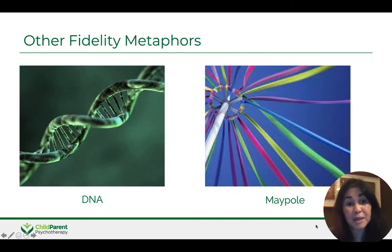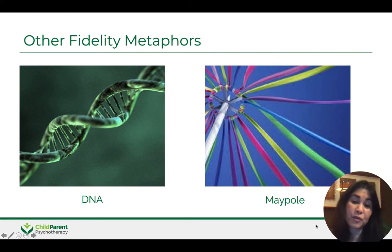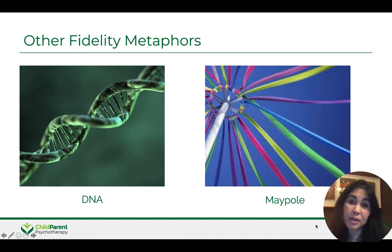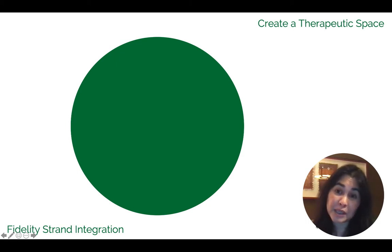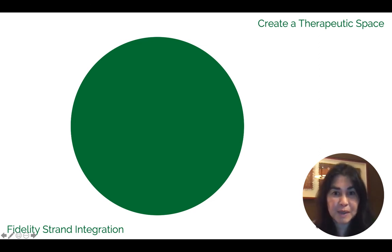Other metaphors that may be helpful are to think of these strands as our DNA. They're inextricably linked. We can also use the metaphor of the maypole, where the center pole is our reflective practice fidelity and we wind the other strings around as we dance together and create the intervention with family members. In just a moment, I'll be talking in greater depth about the first four fidelity strands, and we'll be talking a lot more about all of them during training.